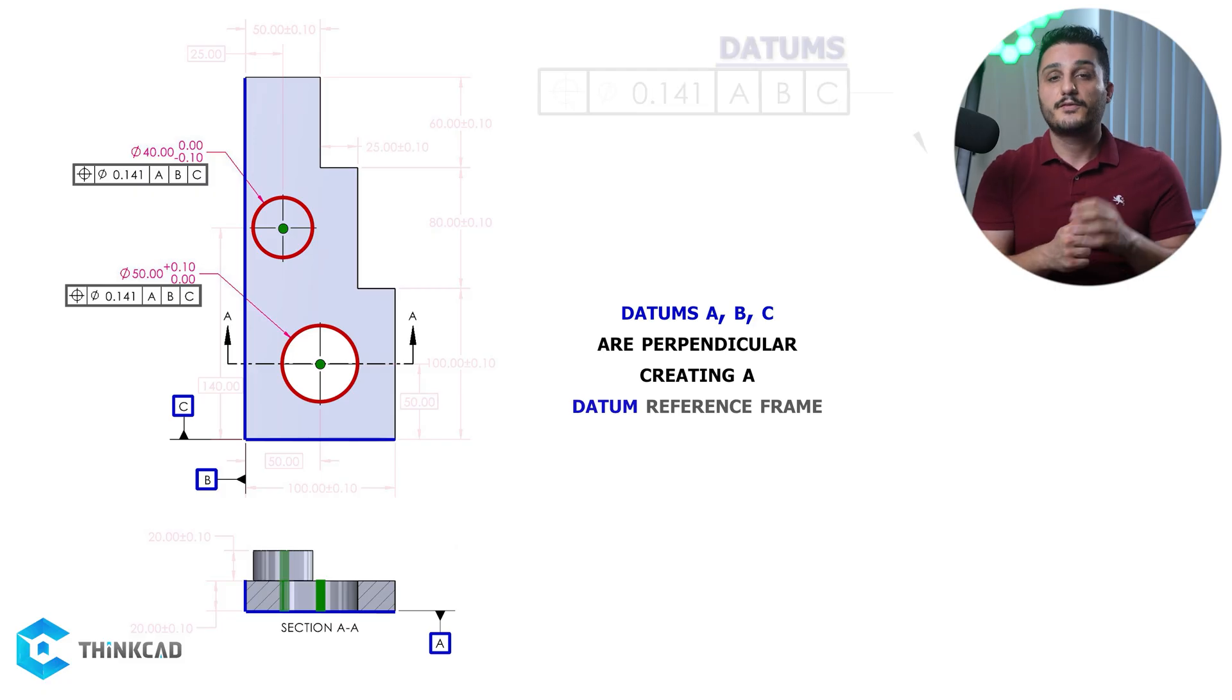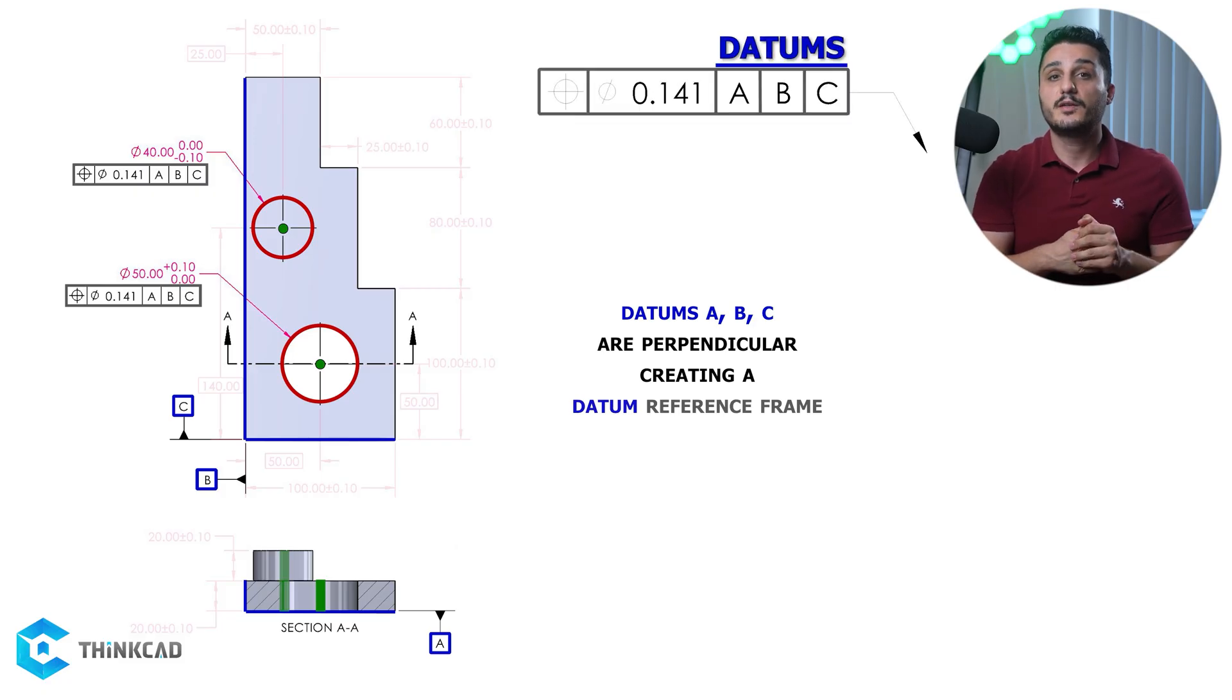Also, let me remind you that the first datum in the feature control frame is your primary datum. The second one is your secondary and the third one is your tertiary datum. They don't have to be alphabetically sorted. You should use them in whatever order that makes sense.